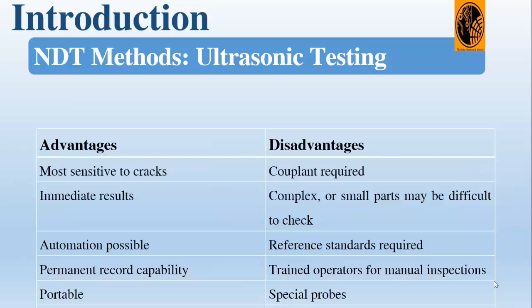Changes in material thickness and material properties can also be measured by this technique. The main advantages of ultrasonic testing are that it is most sensitive to cracks, gives immediate results, automation is possible, provides a permanent record, and is portable. The limitations are that a couplant is required, complex geometry or small parts may be difficult to inspect, reference standards are required, and trained operators and special probes are needed.